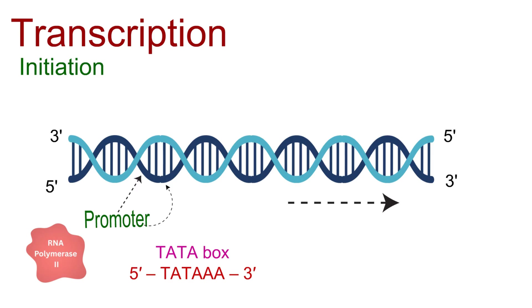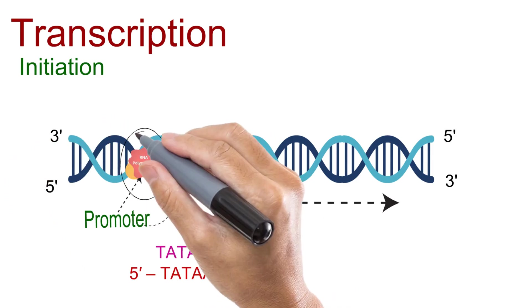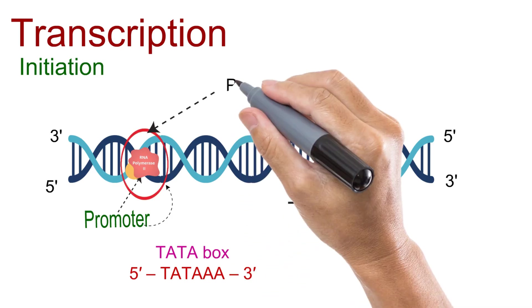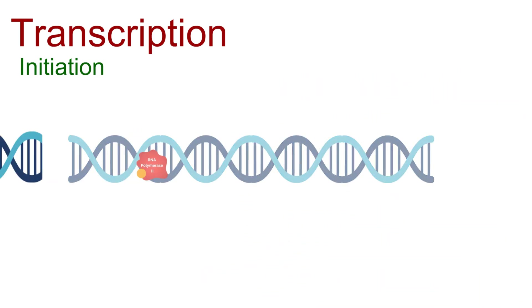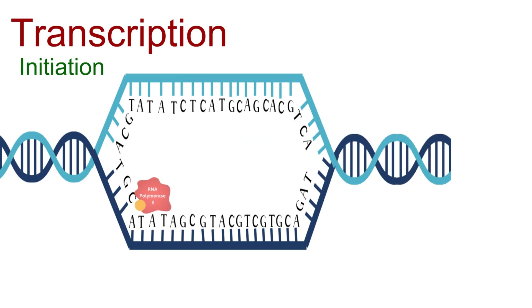In eukaryotic cells, initiation begins when general transcription factors and RNA polymerase 2 bind to the promoter, forming what's called a pre-initiation complex. Once this complex is assembled, the DNA strands are separated at the start site, and RNA polymerase is positioned perfectly to begin synthesizing mRNA. And with that, the stage is set for the next step: elongation.